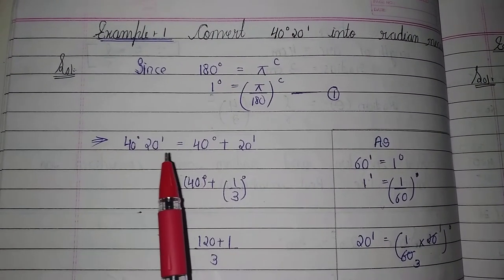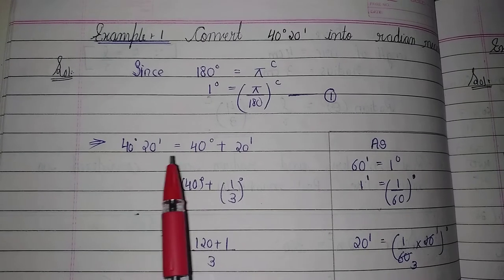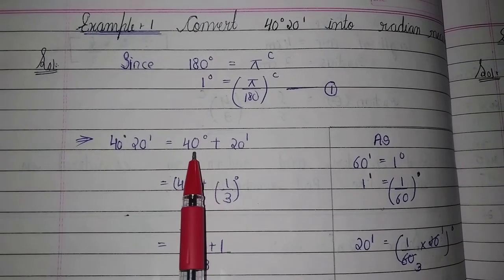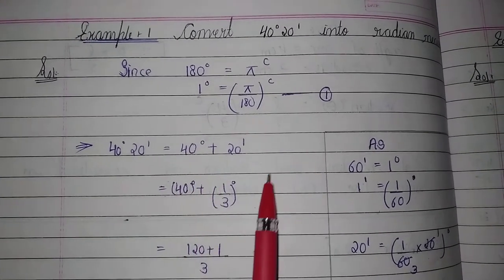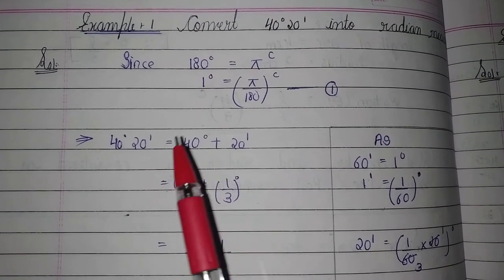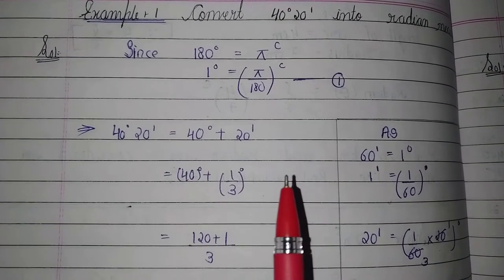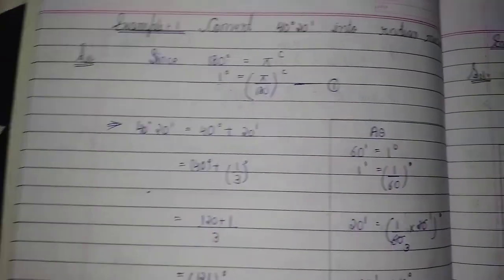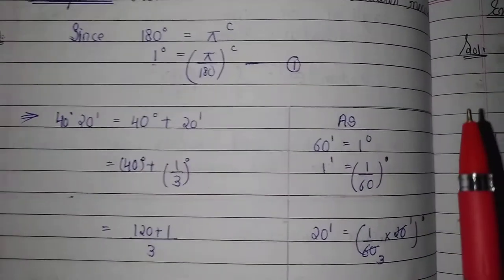Now we write 40 degrees 20 minutes like this: 40 degrees plus 20 minutes.